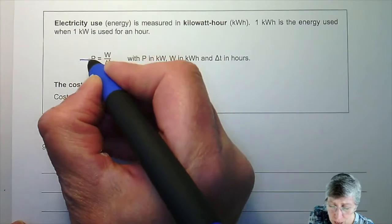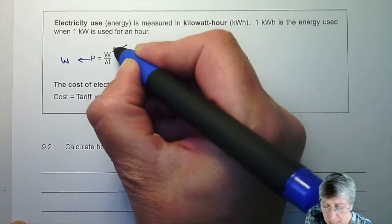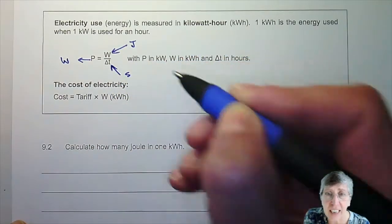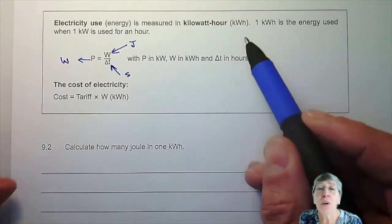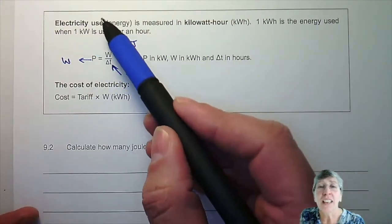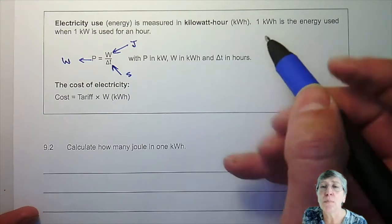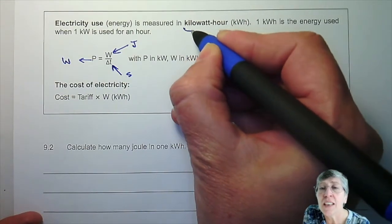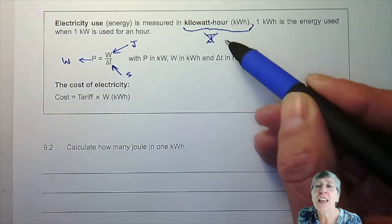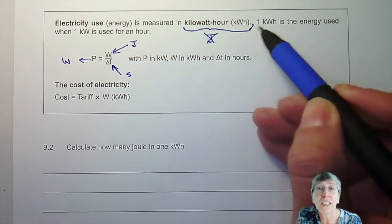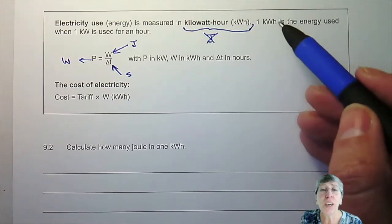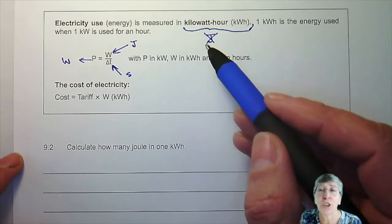We used to have power in watts, energy in joules, and time in seconds. But we've got a problem when we are buying electricity from ESCOM or somewhere else, because the electricity use is not measured in joules. There is an alternative to joules — they are measuring it in kilowatt hours. That's what they call one unit.